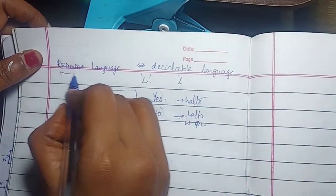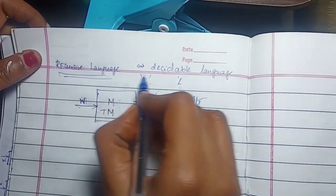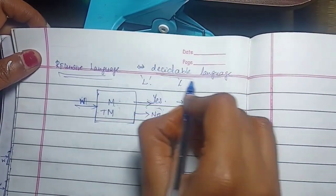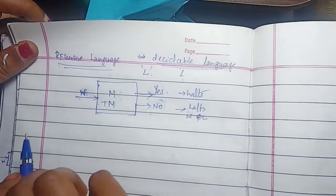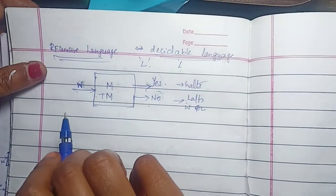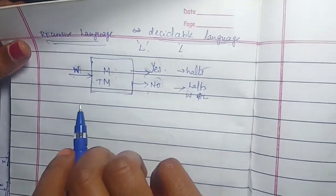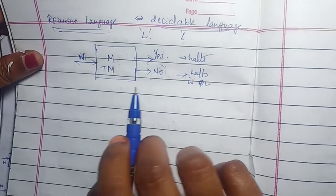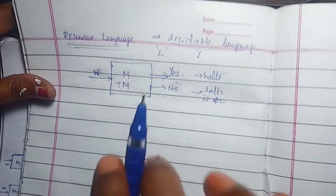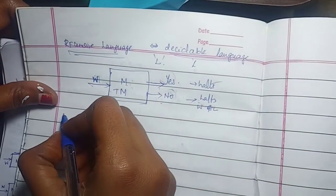Whenever you have this recursive language, it is a decidable language. Any language is undecidable if it is not a recursive language.